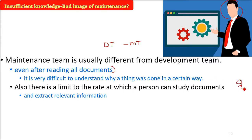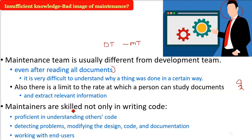Maintainers may be very good at writing code and programming, but the problem is they may not be good at understanding code written by another person — detecting where the bugs are, modifying the design, code, or documentation is very difficult for a second person. The most important part, which involves interpersonal skills, is working with the end user, trying to understand and trying to solve problems — this cannot be a cup of tea for everyone. Working with the end user is also a hurdle.